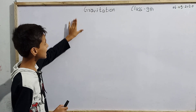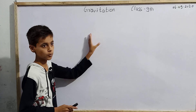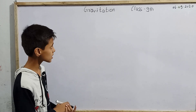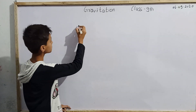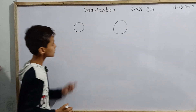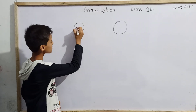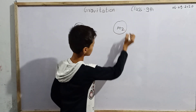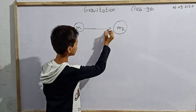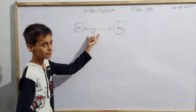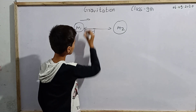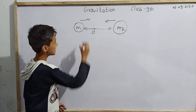In this gravitation chapter, we first look at gravitational force — the force by which Earth attracts every object towards itself. Not only Earth, but each object in the universe attracts another object. If we have two bodies with masses m1 and m2, and the distance between them is d, they will attract each other with some force.